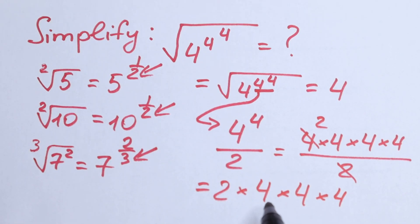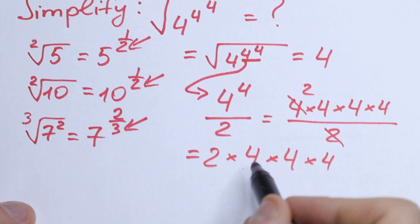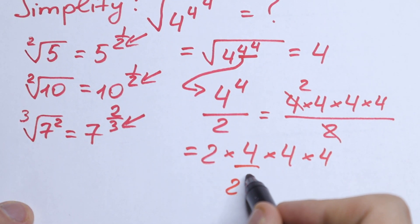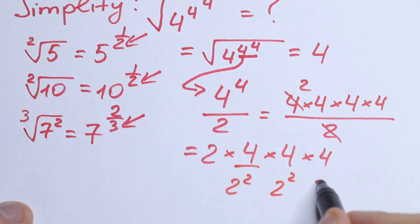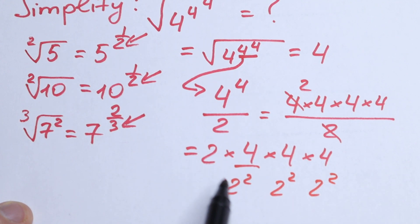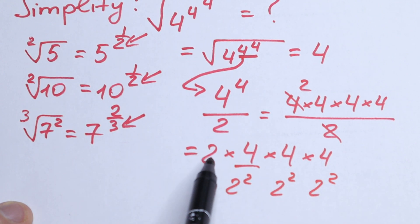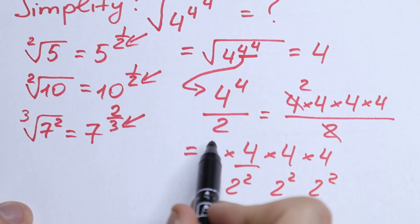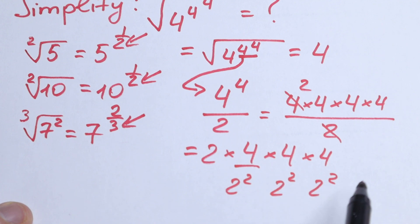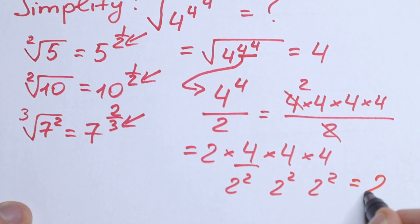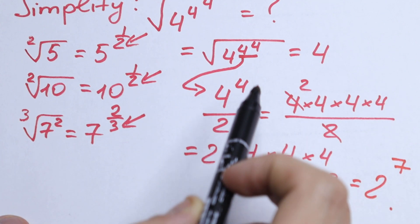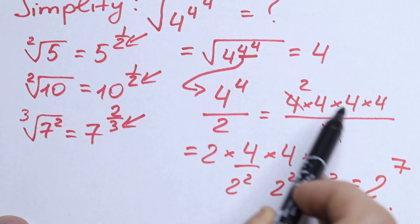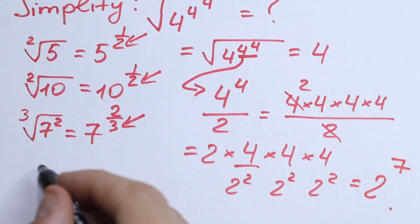We can simplify this further. Writing each 4 as 2 squared, we have 2 times 2 squared times 2 squared times 2 squared. Using the rule that we add all the exponents, we get 1 plus 2 plus 2 plus 2, which gives us 2 to the 7th power. This is our power, so we have found it.